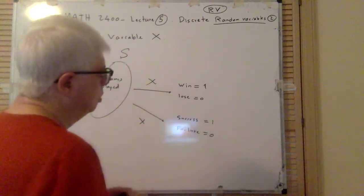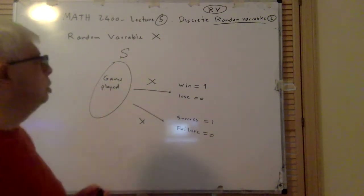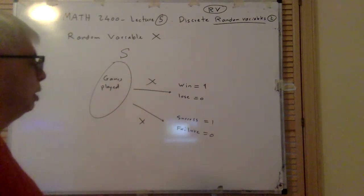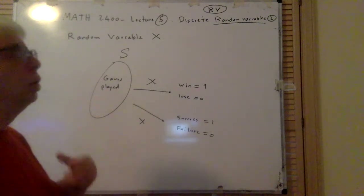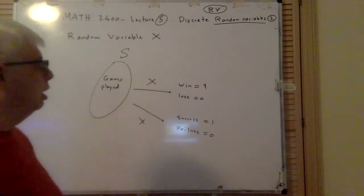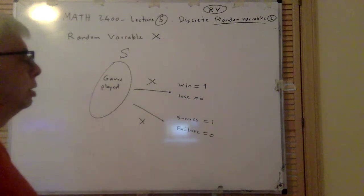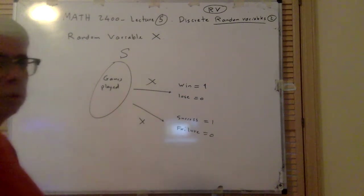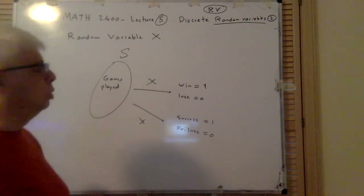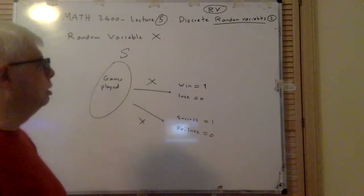As you can see, this Bernoulli random variable comes up a lot — you have dealt with this a lot in your life, but not in this context or in this form. So wherever we are doing something, playing a game or something that has just two outcomes — either you are successful or you fail, or you win or lose — then you can relate that to a Bernoulli random variable.